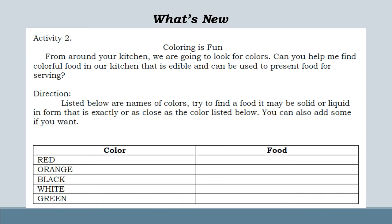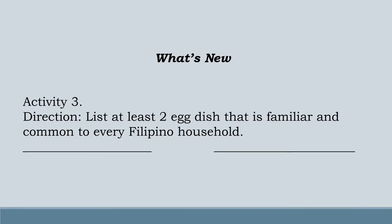Colors to find: Red, Orange, Black, White, Green. You can pause this video to answer the question. What's new? Activity 3 — Direction: List at least 2 egg dishes that are familiar and common to every Filipino household.